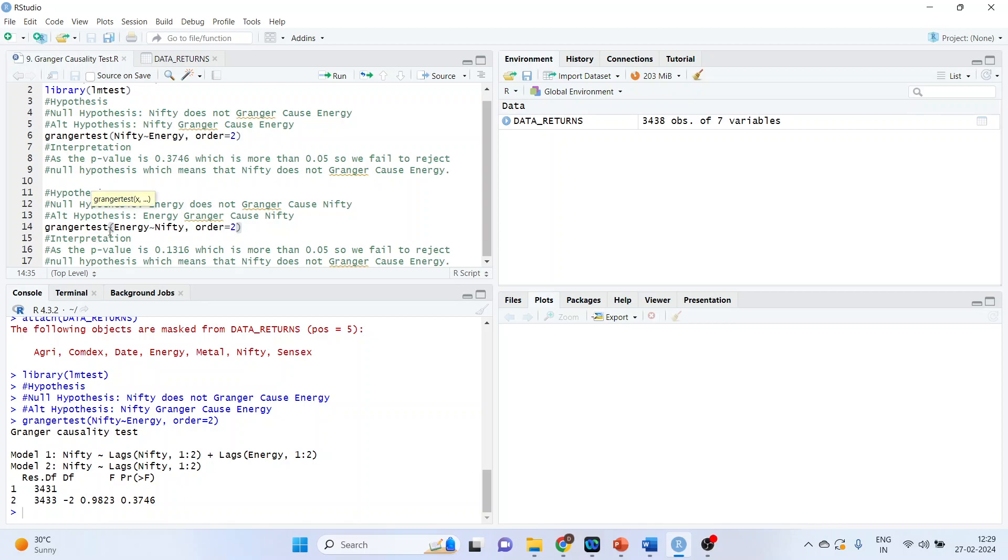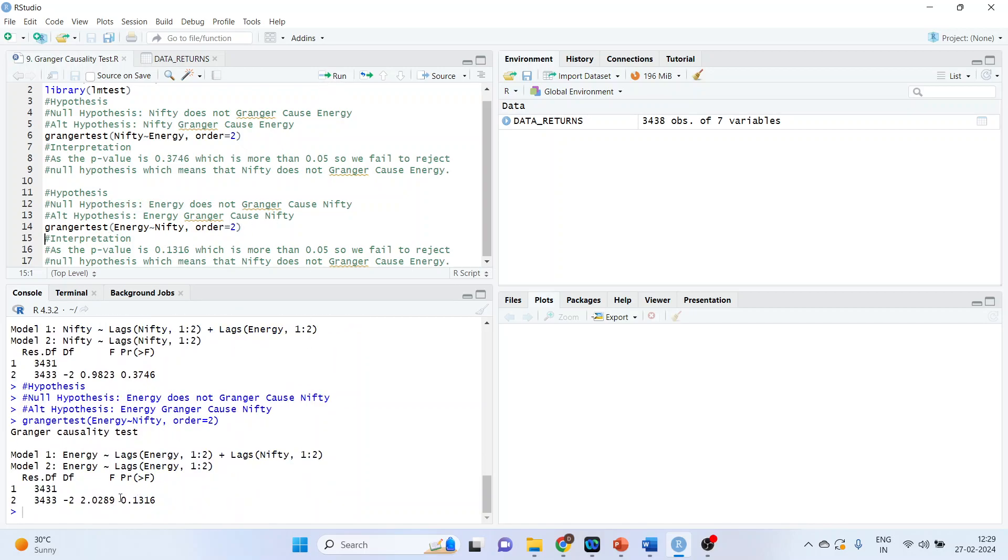The command is Granger test, round bracket, energy, tilde, Nifty, comma, order 2, run. See the p-value. Now we'll write the interpretation. As the p-value is 0.1316, which is more than 0.05, so we fail to reject null hypothesis, which means that Nifty does not Granger cause energy.